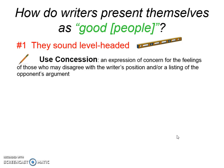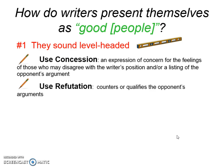Here's an example of a tool: concession. Concession is a rhetorical tool that helps a good person sound level-headed. It's an expression of concern for the feelings of those who may disagree with the writer's position, and/or a listing of the opponent's argument. To sound fair, I sometimes will concede — like when I'm arguing with my husband, I can say, 'I understand you're concerned about our busy schedule this weekend. I hear you. I understand we have probably too much planned for Saturday morning.' And then I refute. Refutation is when you counter or qualify your opponent's arguments — this is when you say your side.